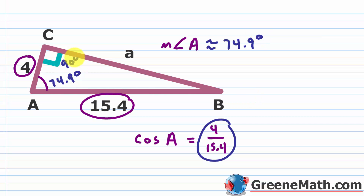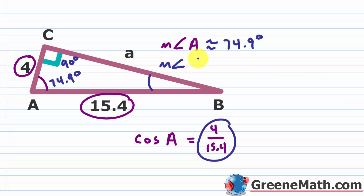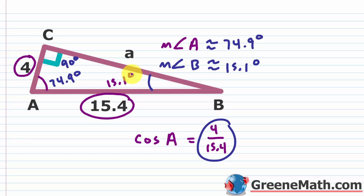Since angle C is 90 degrees, the measure of angle B is approximately 90 degrees minus 74.9 degrees, which equals 15.1 degrees. So we now have all three angles of the triangle.